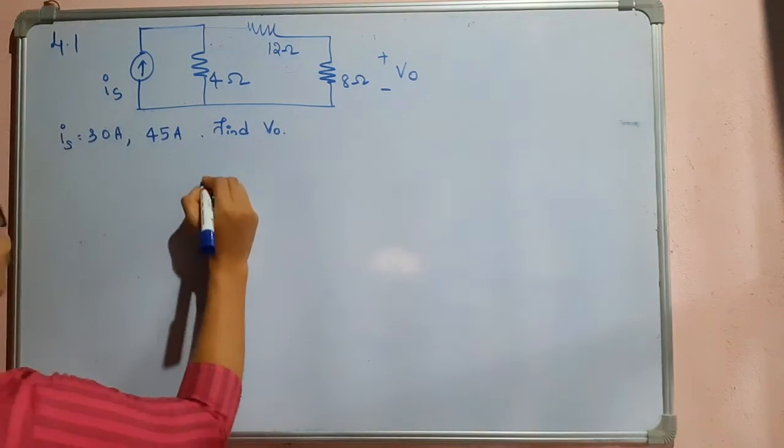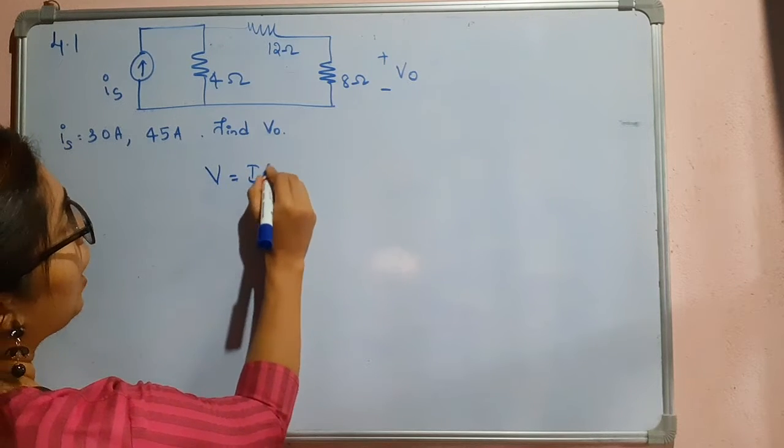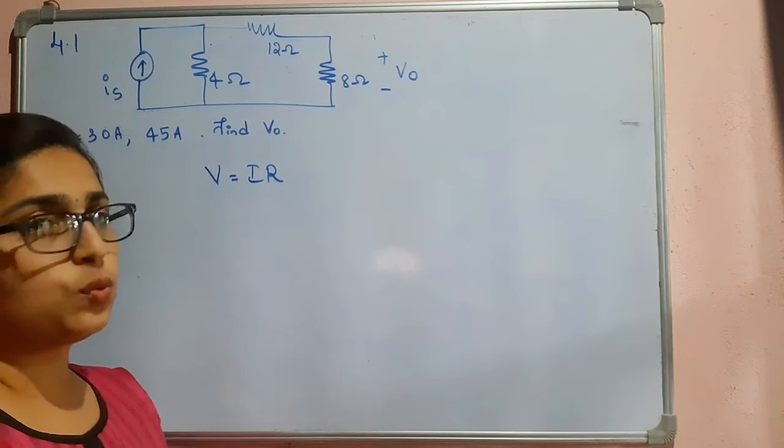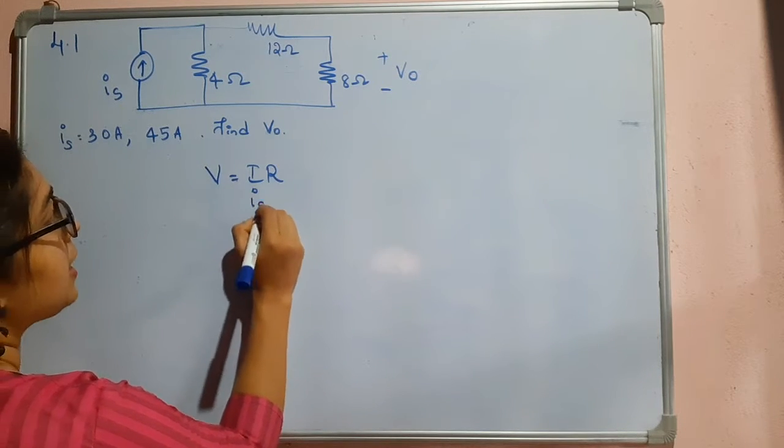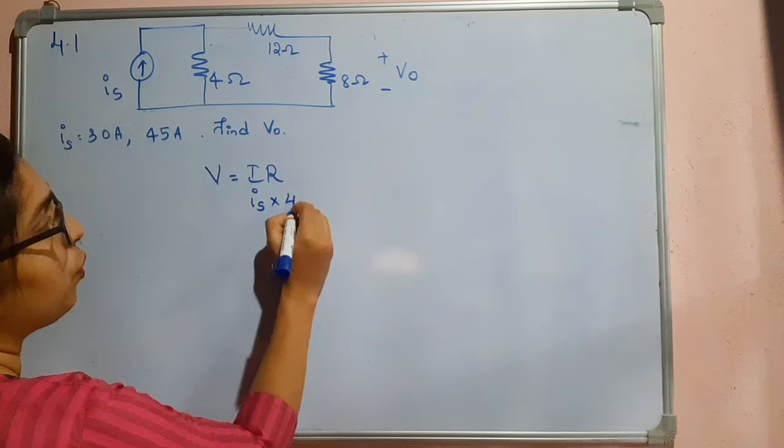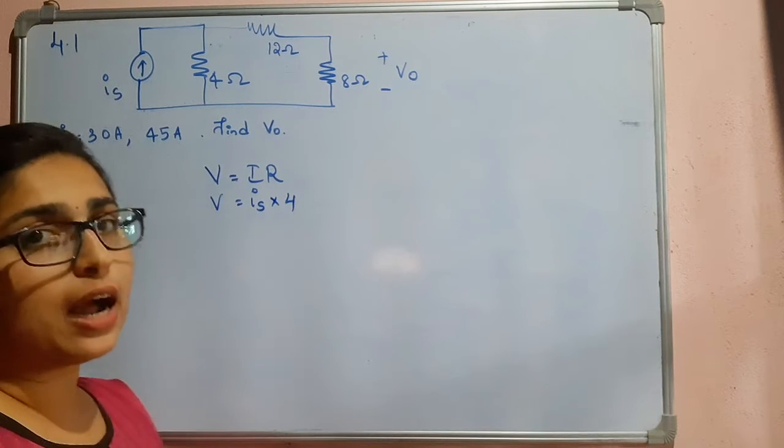You know voltage is equal to I into R. So to convert this current source to voltage source, first let us find the voltage. Here the current value is IS and the resistance value is 4, so the voltage will be 4IS.